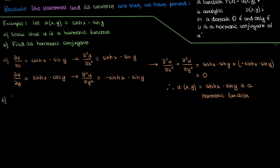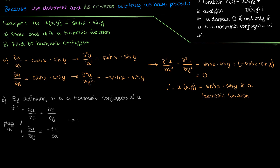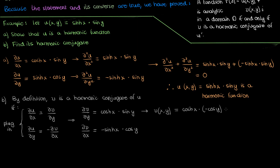Let's now find the harmonic conjugate of u. Using the definition of the harmonic conjugate, we know that v is a harmonic conjugate of u if the Cauchy-Riemann relations are satisfied. Plugging in the partials of u with respect to x and y gives us two partial differential equations for the derivatives of v. Integrating the first expression with respect to y: cosh x can be treated as a constant, so we just integrate sine y with respect to y, which gives negative cosine y. Our constant of integration here is actually a function of x, since a function of x is essentially a constant when we take the partial derivative with respect to y.